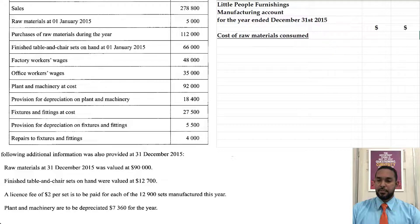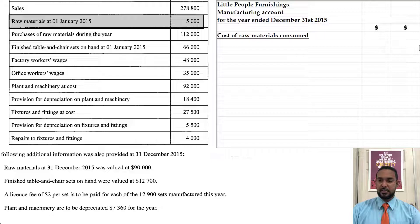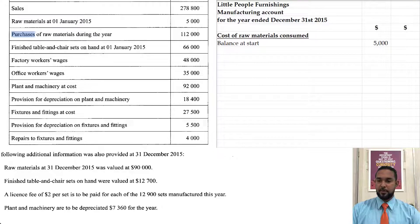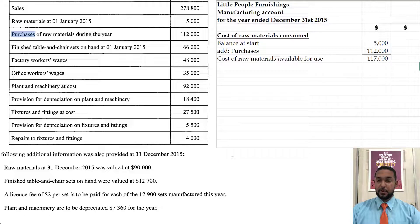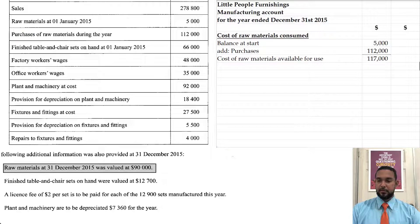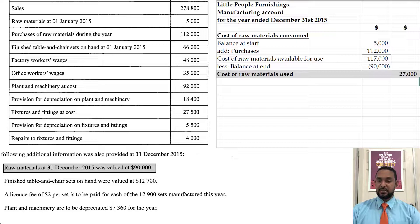So the first thing we're going to put is the cost of raw materials consumed. That starts with raw materials at start of $5,000. Then we add purchases of raw materials of $112,000, giving us the cost of raw materials available for use. From that we deduct the closing stock of raw materials of $90,000, giving us $27,000 — that's the cost of raw materials used.